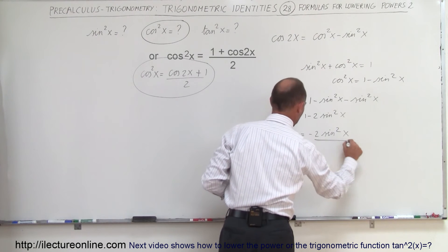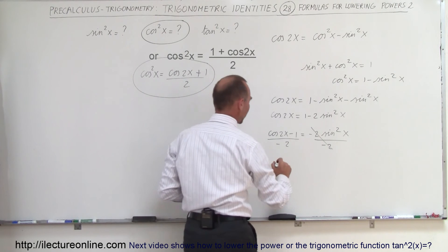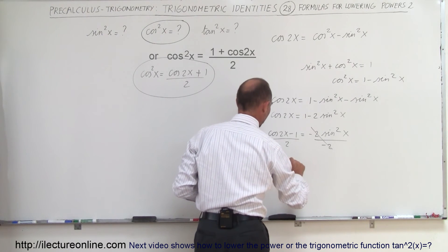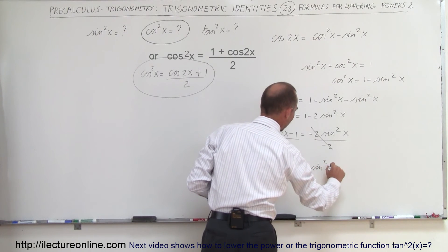Dividing by negative 2, so this cancels out. We can apply the negative by switching these around, so now we can write that 1 minus the cosine of 2x divided by 2 equals the sine square of x.